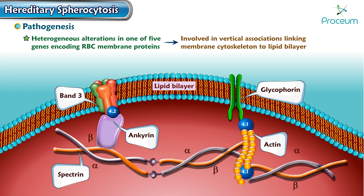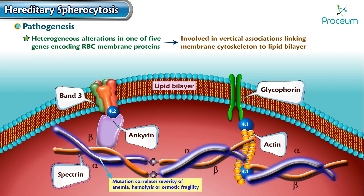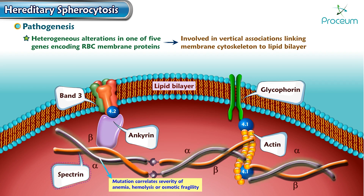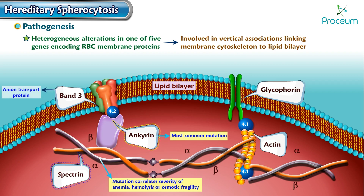These proteins include spectrin — the alpha spectrin mutation correlates with the severity of anemia, hemolysis, or osmotic fragility. The others include ankyrin, which is the most common mutation; band 3, which is an anion transport protein; band 4.2, also known as pallidin; and band 4.1. Glycophorin is not involved in the pathogenesis of hereditary spherocytosis.